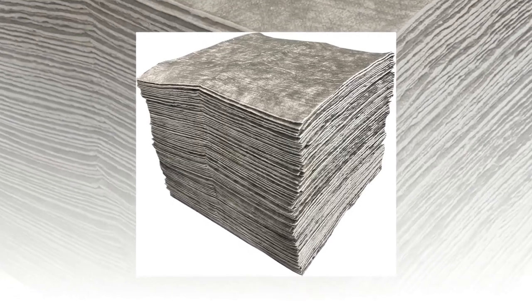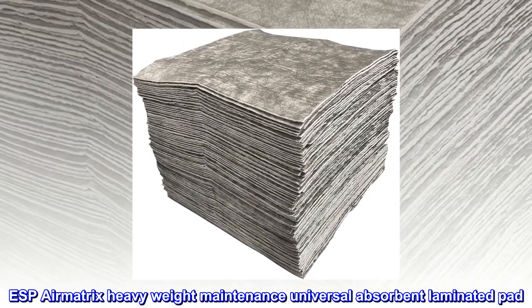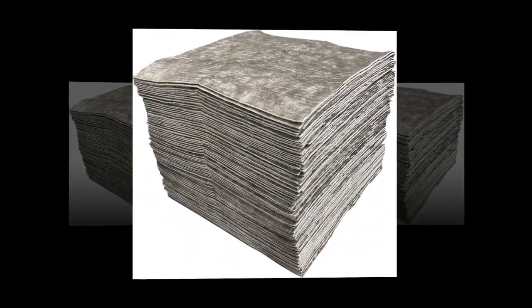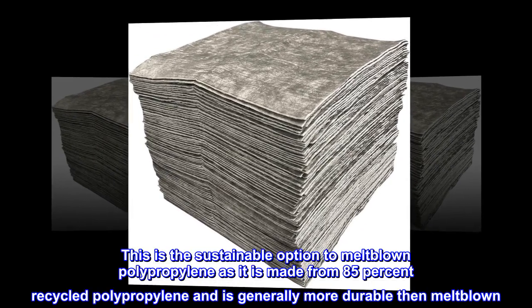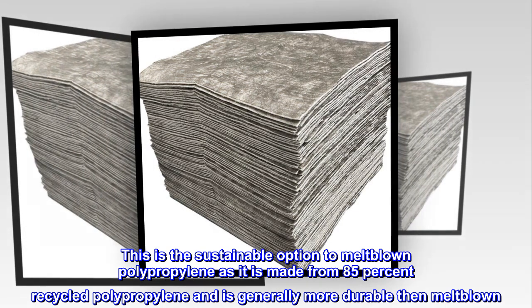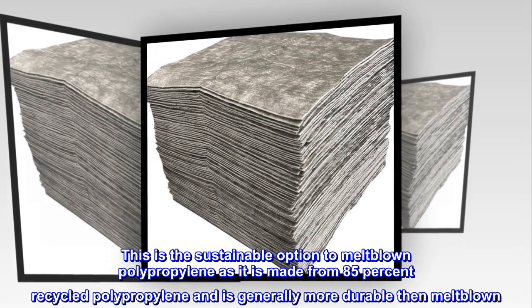Minimal linting ESP Air Matrix Heavyweight Maintenance Universal Absorbent Laminated Pad. This is the sustainable option to melt blown polypropylene, as it is made from 85% recycled polypropylene and is generally more durable than melt blown.